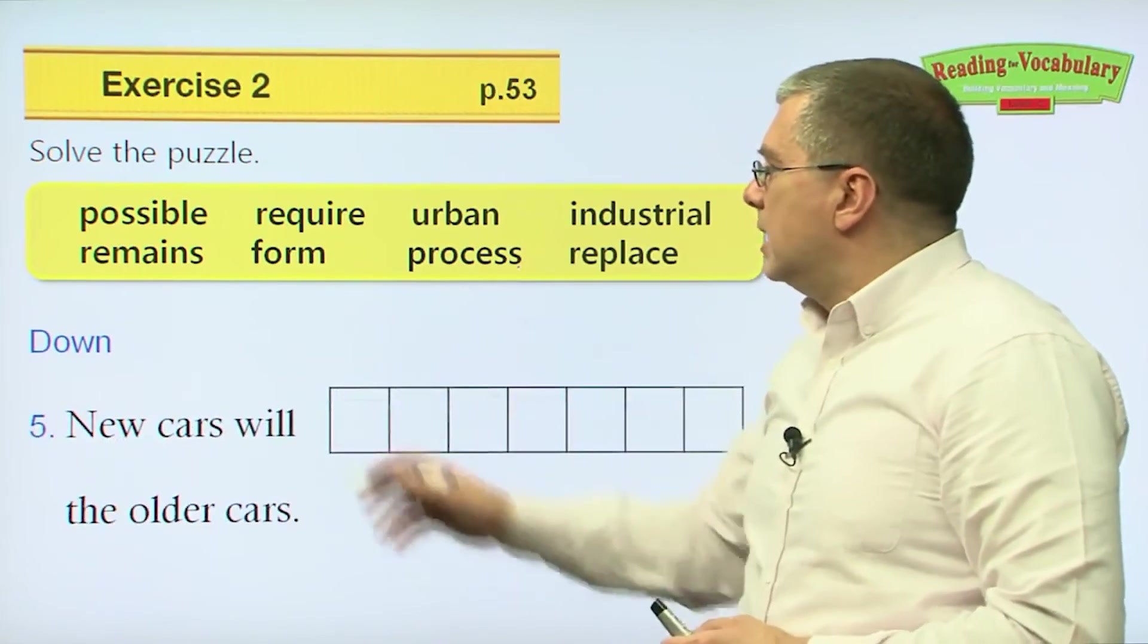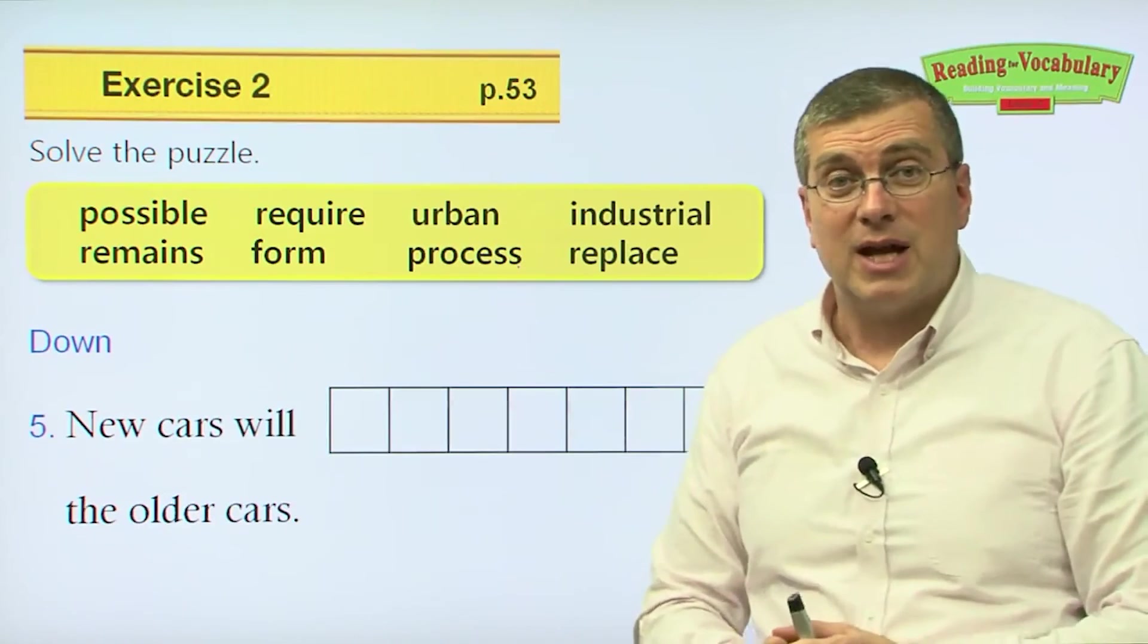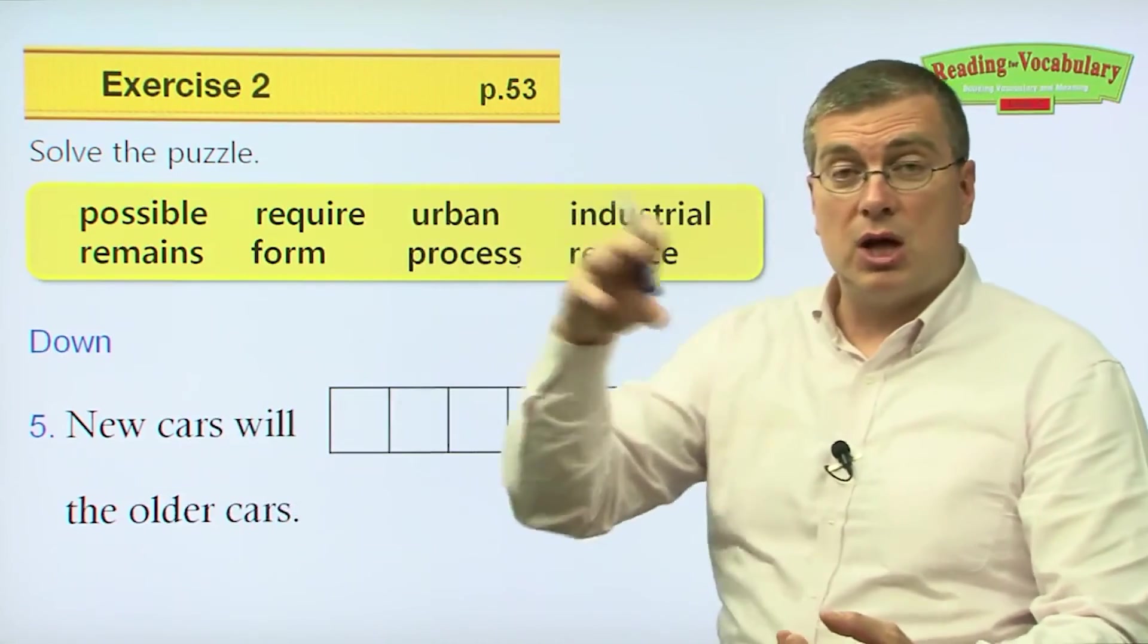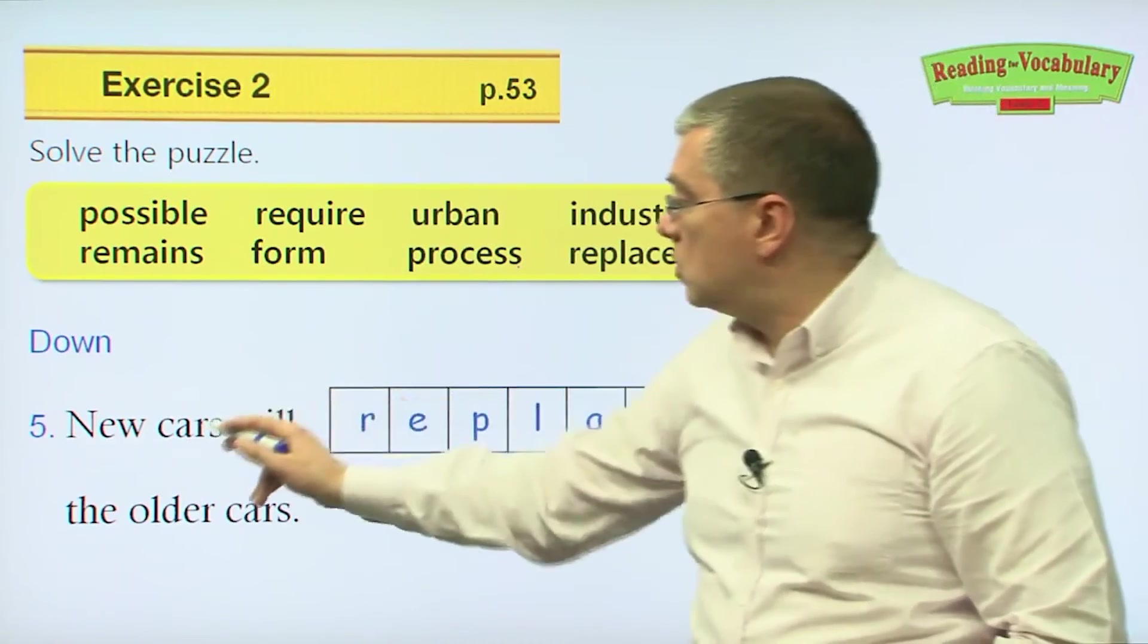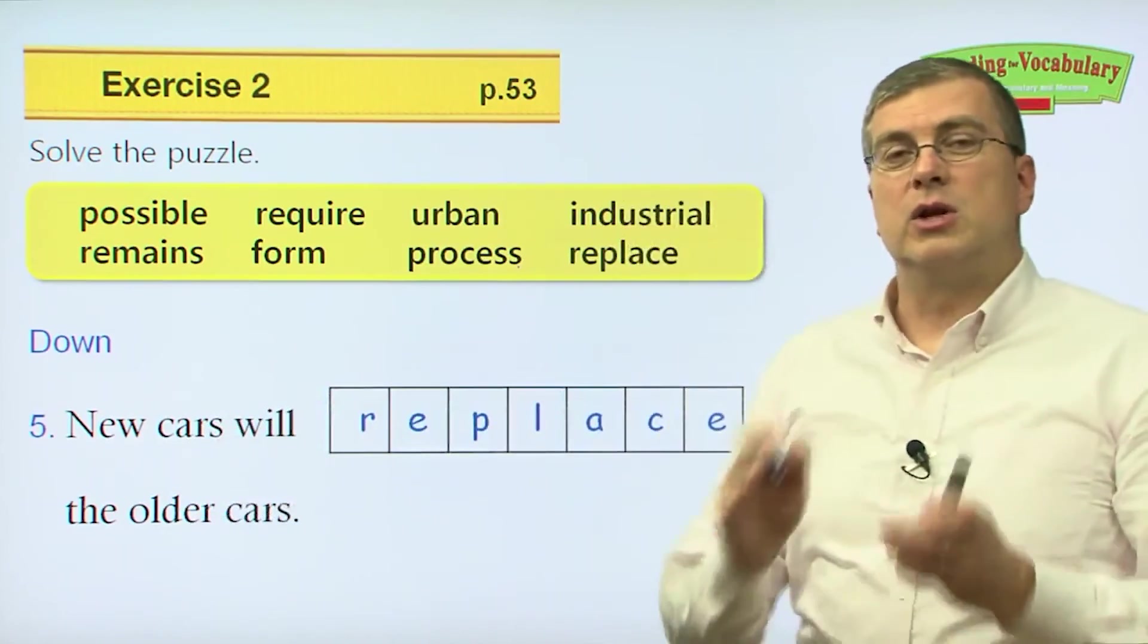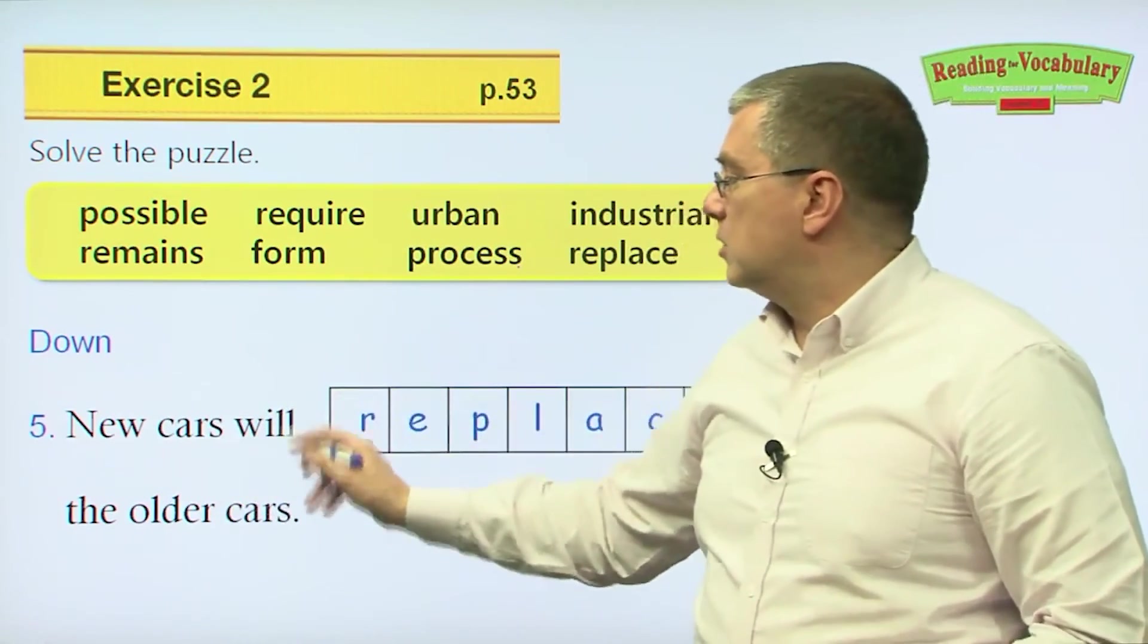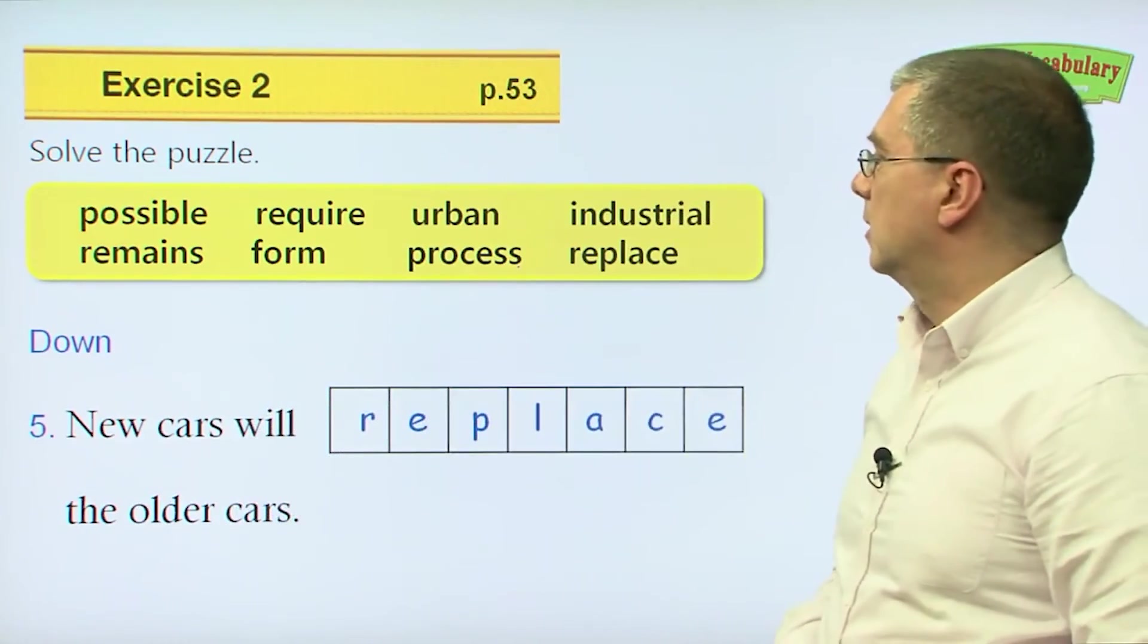Number five down. New cars will something the older cars. Remember we talked about this. You change one thing for another. If something's old that doesn't work, you remove it and you put a new one in its place. What are you doing? You are replacing. New cars will replace the older cars. So you will replace the old one with a new one.